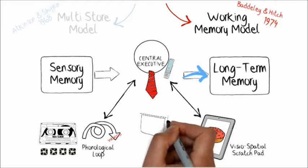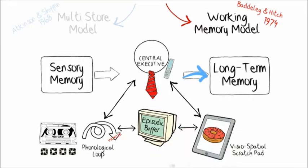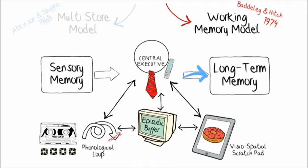In 2000, the episodic buffer was added to the model to coordinate information across domains, ordering it chronologically and associating it with long-term memory.